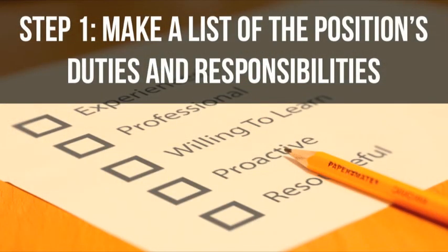Step 1: Make a list of the position's duties and responsibilities. One of the mistakes that small business owners often make when writing a job description is not outlining in detail what the day-to-day of the new employee would look like. This makes it hard to identify the right candidate and makes it less likely that your job posting will attract the specific talents you require. So think about what the day-to-day responsibilities will be and put those responsibilities down in a list.